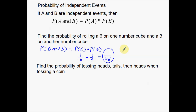So again, this 'and' word — if I want both of these to occur, the 'and' tells me yes, I want both of them to occur. In that case, the probability is found by simply multiplying the individual probabilities together, as long as they are independent events.